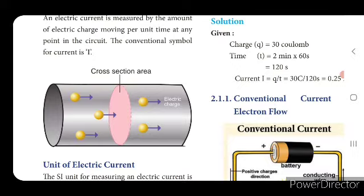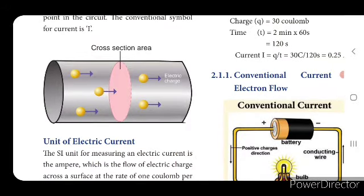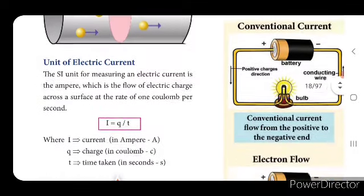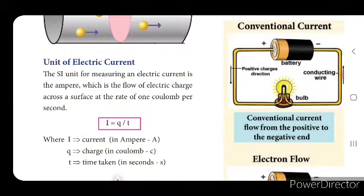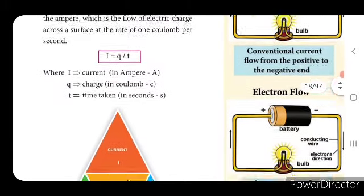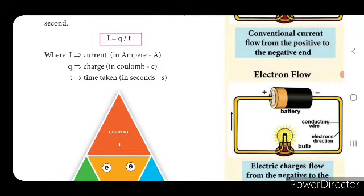At any point in the circuit it will be moving. The conventional symbol for current is I. Electric current is measured by a cylindrical cross-section area through which charges are in movement. The SI unit for measuring electric current is the ampere, which is the flow of electric charge across a surface at the rate of one coulomb per second. So coulomb is the unit of electric charge. Electric current I is equal to Q divided by T, where I is electric current measured in ampere.